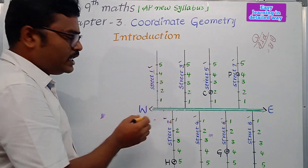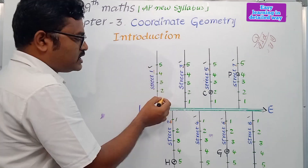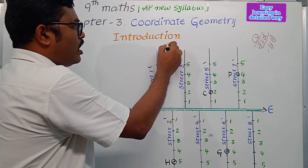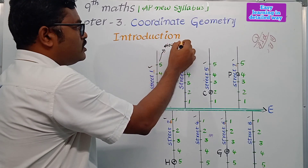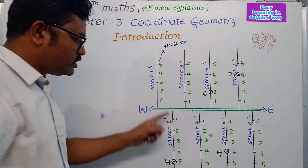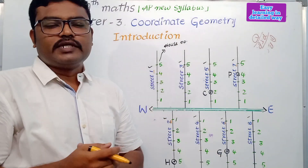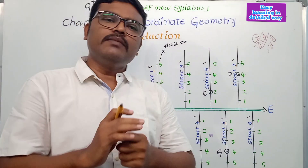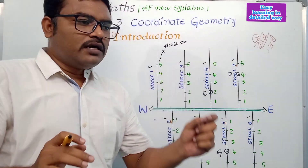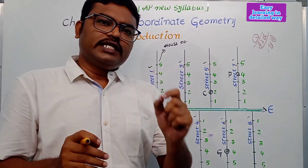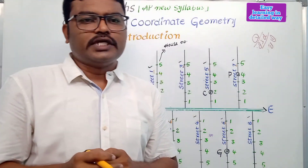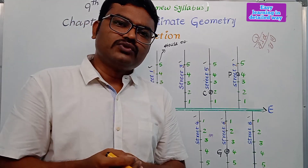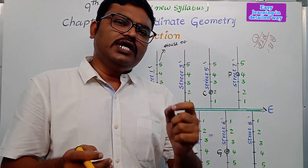Every street has a house number. These are house numbers. Every street, we have a house number. Now, if we have to get a courier delivered — like from Amazon or Flipkart — the courier person needs to find a specific house by its address.